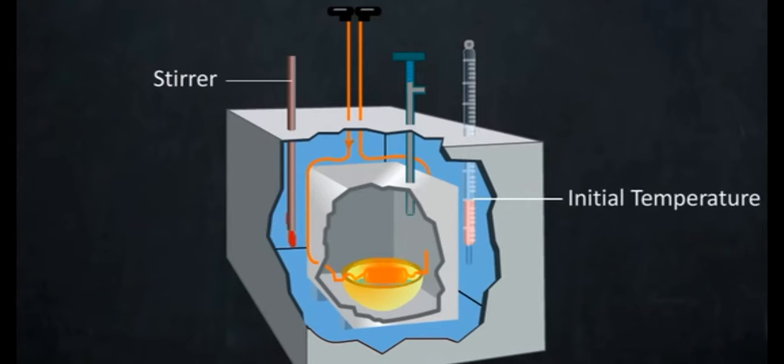The initial temperature of water is noted and the reaction and combustion is started by passing an electric current through the platinum wire.